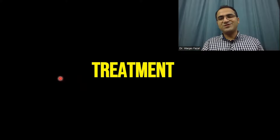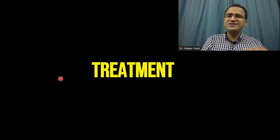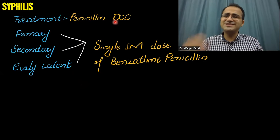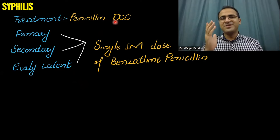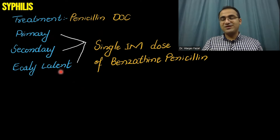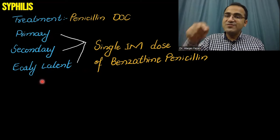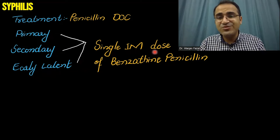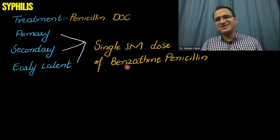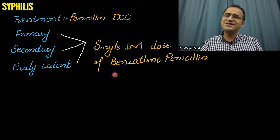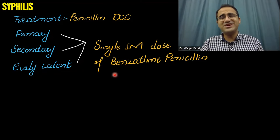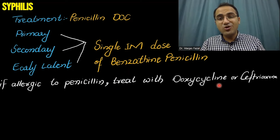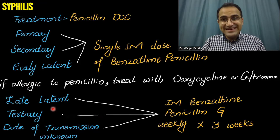Now, coming to the treatment of syphilis. As dreadful as this disease sounds, the treatment is very simple — penicillin. Benzathine penicillin is the drug of choice. For primary, secondary, and early latent syphilis (within one year of onset of symptoms), a single IM dose of 2.4 million units of benzathine penicillin is sufficient. If the patient is allergic to penicillin, you can treat with doxycycline or ceftriaxone.